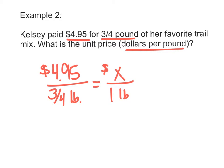So I have 4.95 times 1 divided by three-fourths. And what I think would make this easier for me is instead of doing three-fourths, I'm going to put that in as a decimal because I know three-fourths is 0.75. That makes it easier to work with. So we have 4.95 divided by 0.75, and I get 6.6.